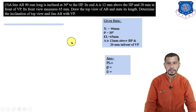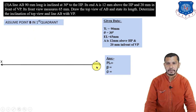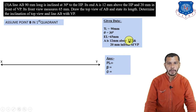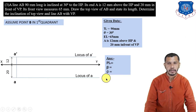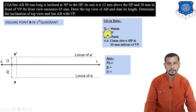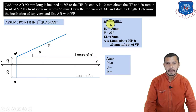Draw XY reference line. Mark plan and elevation of point A: 12mm above HP gives A-dash above XY; draw locus of A-dash. 20mm in front of VP gives plan of A below XY; draw locus of A. True length 90mm and theta are given, so from A-dash draw a line inclined at theta = 30°, with length 90mm, to get B1-dash. Draw locus of B1-dash — this is also the locus of B-dash.